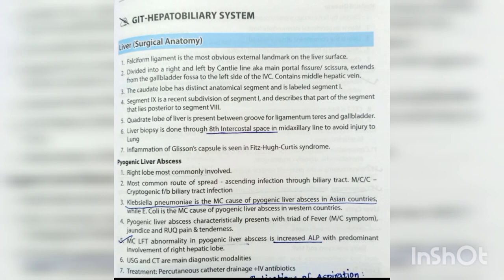Welcome to Easy Revision. Today we cover surgery PYQs on GIT and hepatobiliary system. The falciform ligament is the most obvious external landmark on the liver surface. The liver is divided into right and left by Cantlie's line, also known as the main portal fissure or scissura, which extends from the gallbladder fossa to the left side of the IVC and contains the middle hepatic vein. The caudate lobe is labeled segment 1; segment 9 is a recent subdivision of segment 1 describing the part posterior to segment 8.